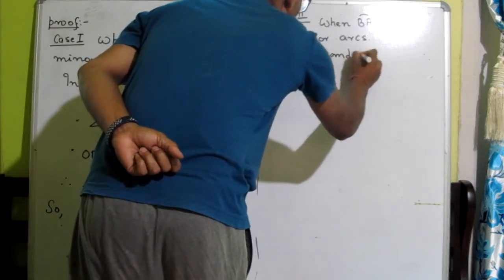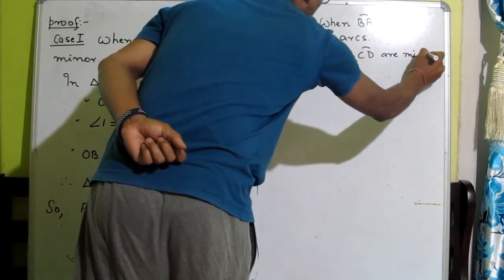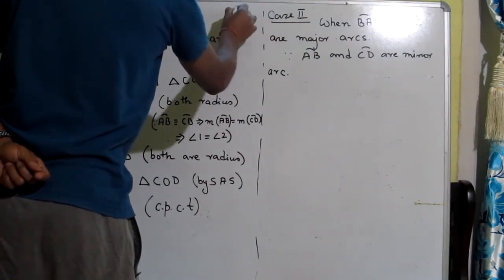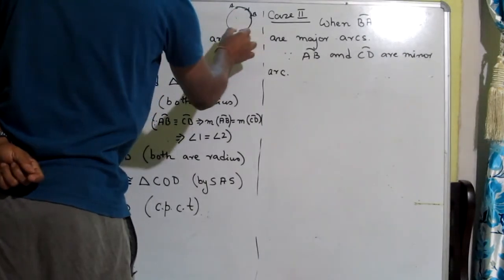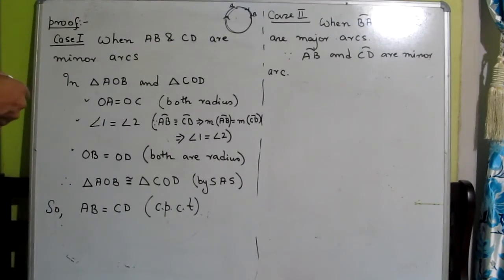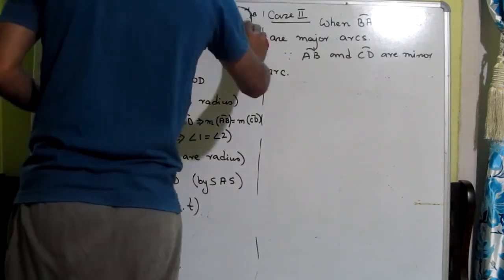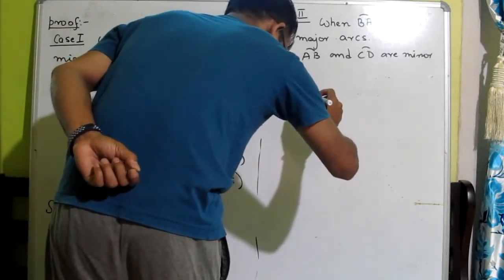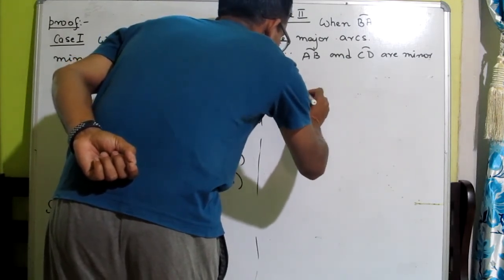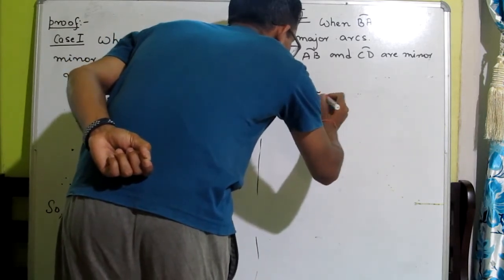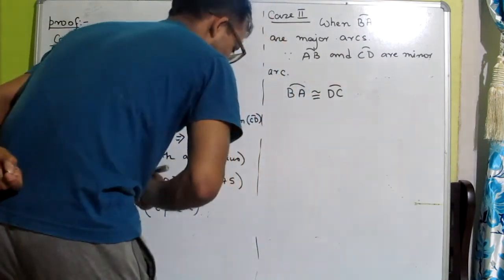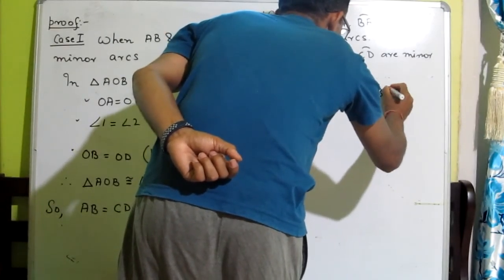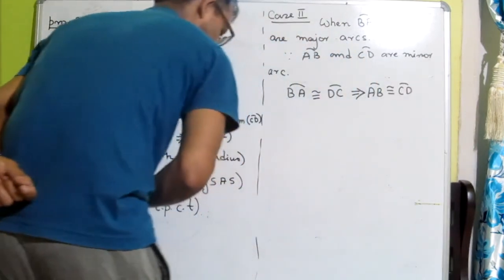Since arc AB and arc CD are major arcs, arc BA equals arc AB. So arc BA equals arc CD. This means we can reduce to the corresponding minor arcs. The measure of arc BA is congruent to the measure of arc DC, which implies the minor arc BA is congruent to the minor arc CD. So the result follows.